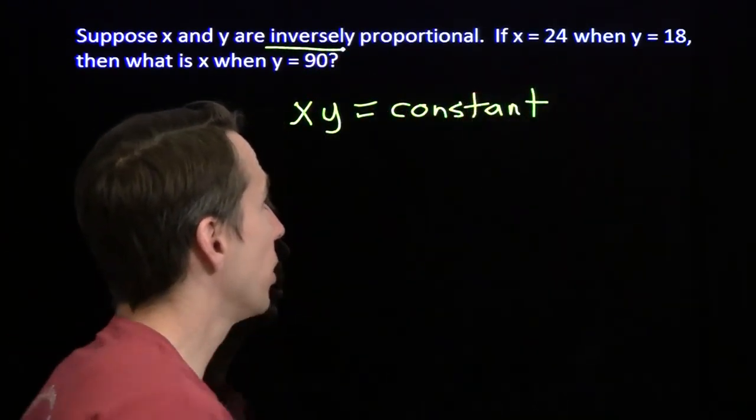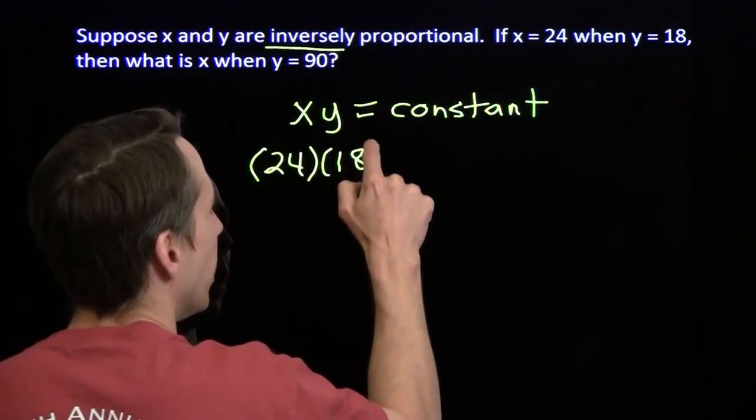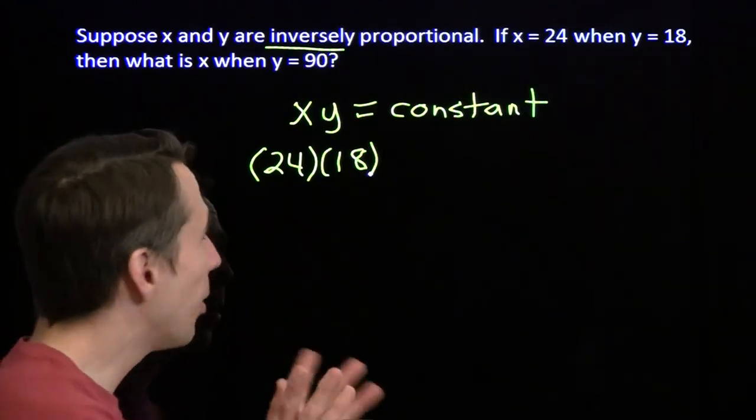Here, x is 24 when y is 18. That constant is 24 times 18, whatever that is. We could go ahead and figure that out, but we don't have to.